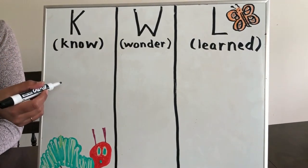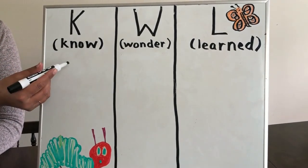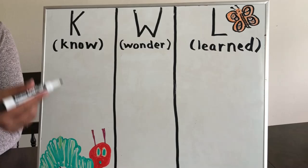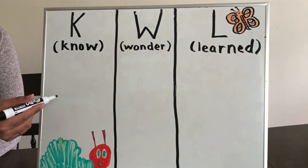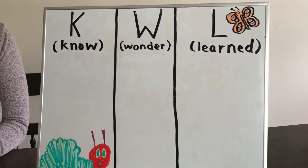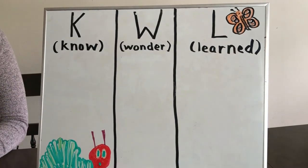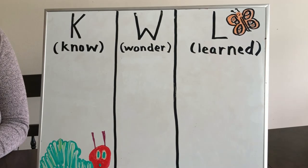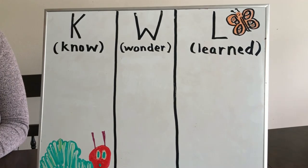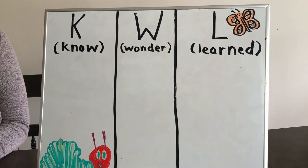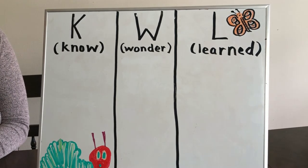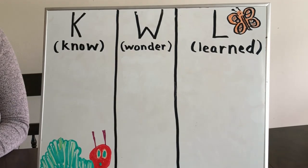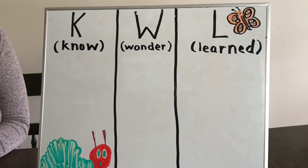Here is the K column. In the K column, you want to write everything you already know about the topic. In the W column, that's where any of your questions go, the things you're wondering about. And the last column is the L column, and that's everything that you've learned later on.